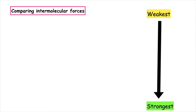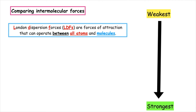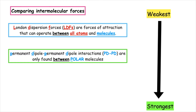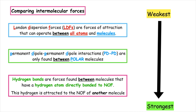There are three types of intermolecular force, or van der Waals force, that we have to know. The weakest are London dispersal forces, which are forces of attraction that operate between all atoms and molecules due to the movement of electrons. We then have permanent-dipole–permanent-dipole interactions, found only in polar molecules. The strongest are hydrogen bonds, which are forces found between molecules that have a hydrogen directly bonded to an N, O, or F — and this hydrogen is attracted to the N, O, or F of another molecule.